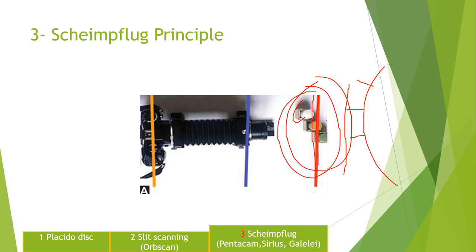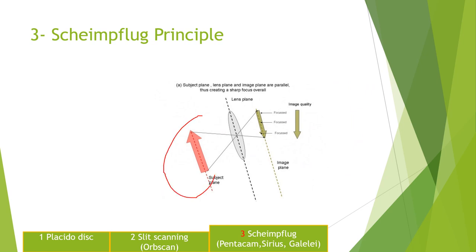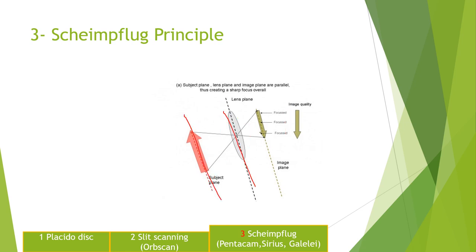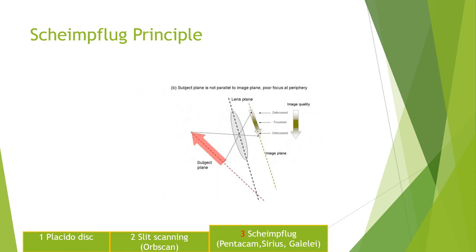What is the Scheimpflug principle? There is the object, the lens, and the image. When the object, lens, and image are in the same plane because they are straight, the image quality is good — but that is not the case in real life. In real life the cornea is curved, so we have to do something. We solve the problem by using a Scheimpflug intersection: the image quality is initially blurred, so we change the direction of the image to make a Scheimpflug intersection and get a clear image.